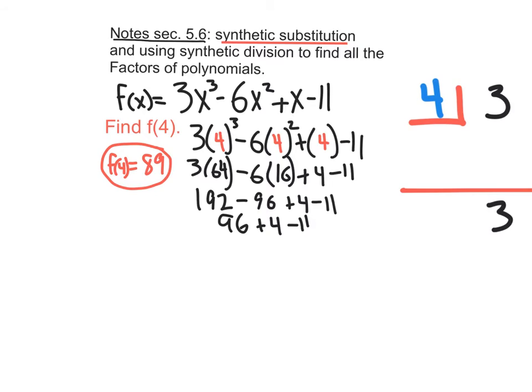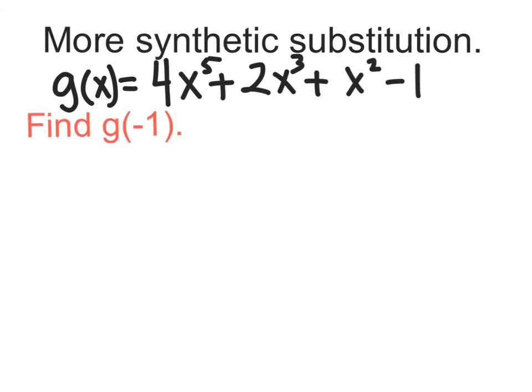We're going to be able to do synthetic substitution to plug in values to make math a little bit easier. Let's try another one. Copy this one down. g of x equals 4x to the 5th minus 2x to the 3rd plus x squared minus 1, and they want us to find g of negative 1. To be honest with you, you could choose your method. You could plug in negative 1 the way we used to, or you could use synthetic substitution, which I believe is a lot faster.